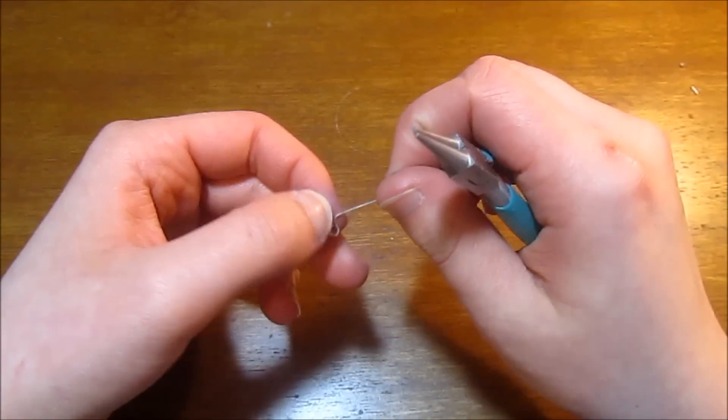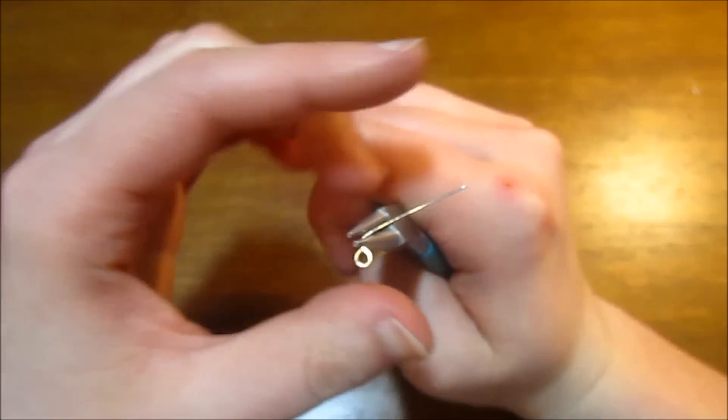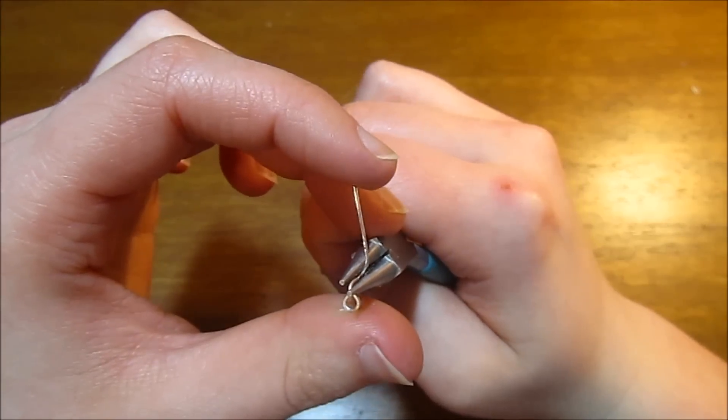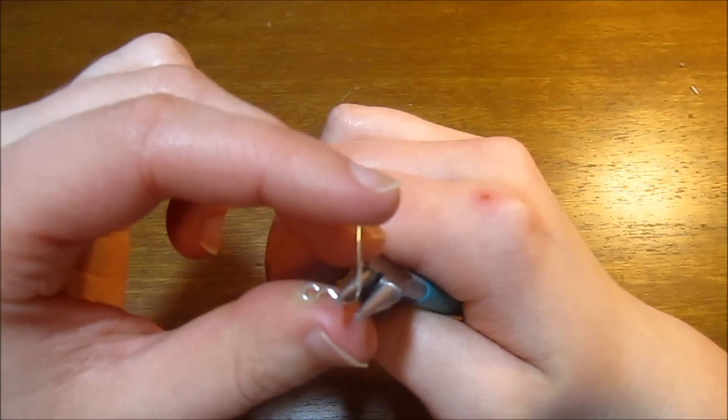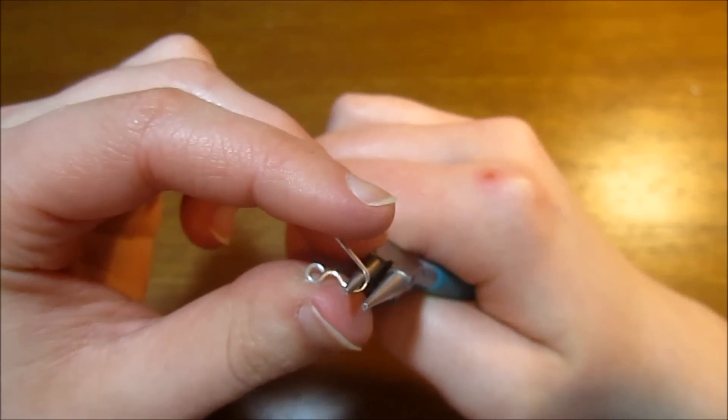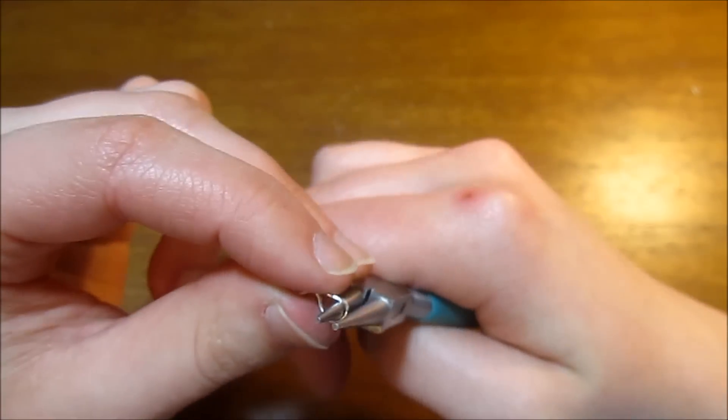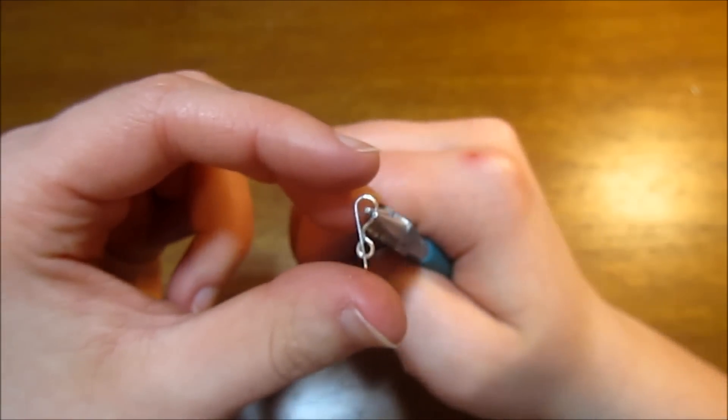Now we're going to take our round nose pliers again and form the actual bail of our piece. I'm just making a nice oval that's a little bit taller than that first loop we made to attach to the pendant itself.